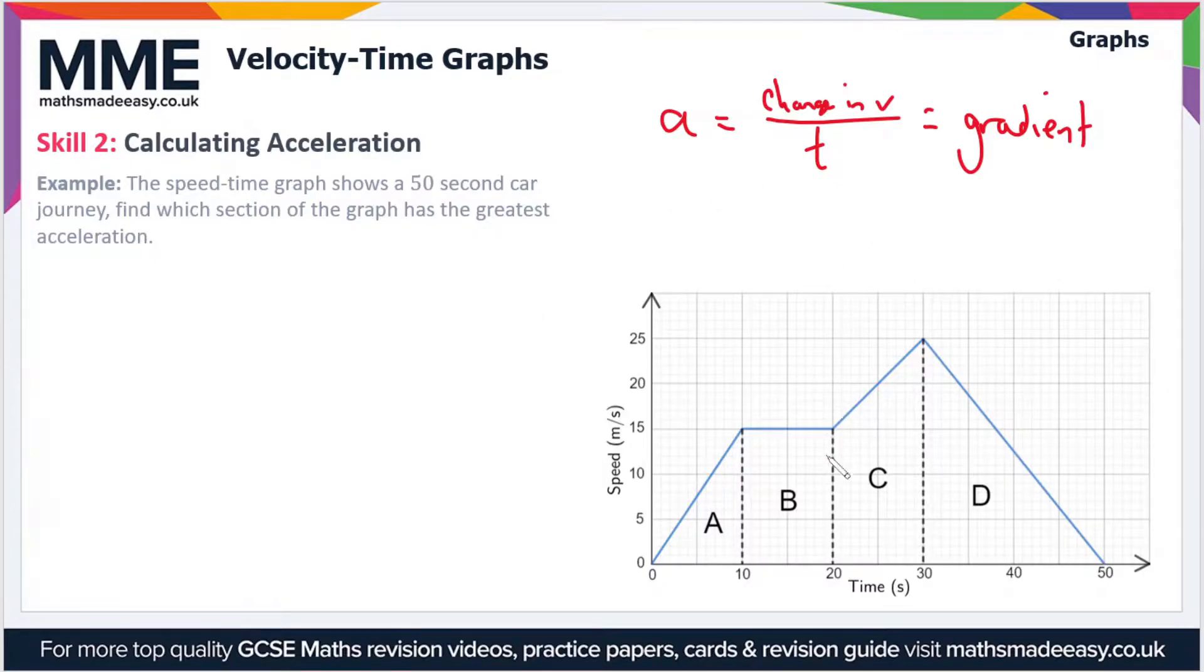Looking at this graph, we can instantly rule out section B as there's no change in the speed, therefore the gradient is zero. We can also see by inspection that A and D are both steeper than C, so let's rule out C as well. Now we're only considering sections A and D.